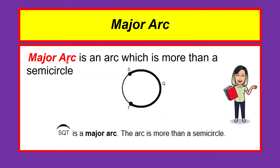A major arc is an arc which is more than a semicircle. When naming a major arc, we use three letters. So we can name this major arc as major arc SQT. The arc is more than a semicircle.